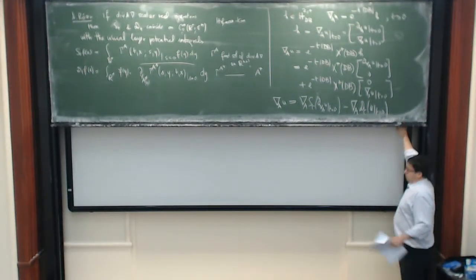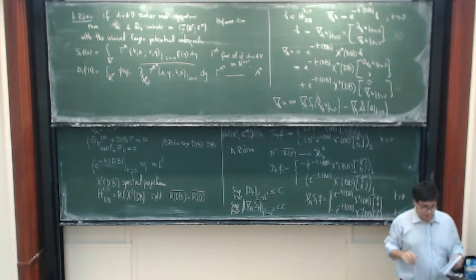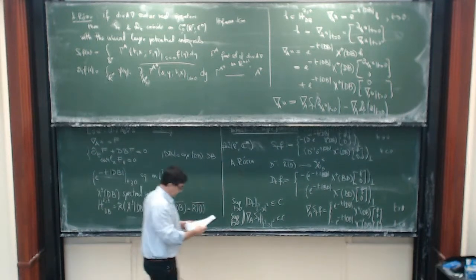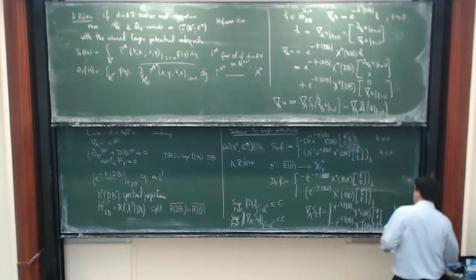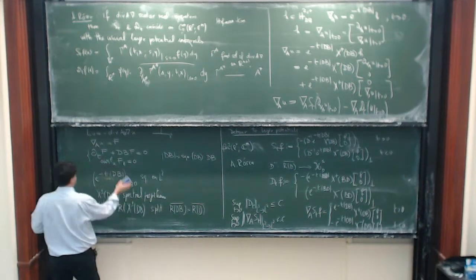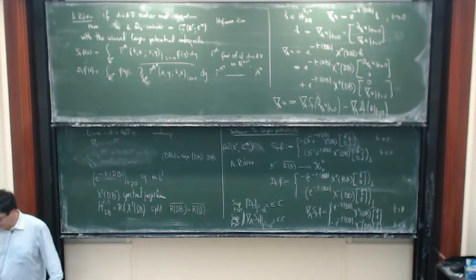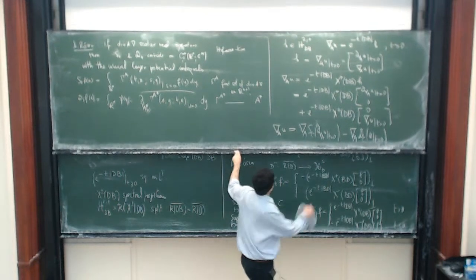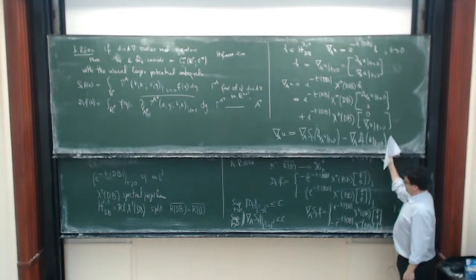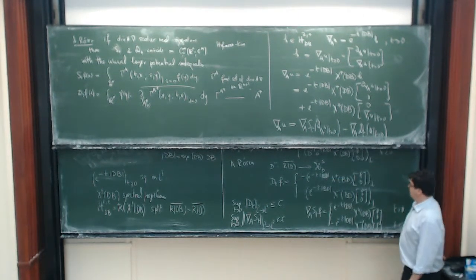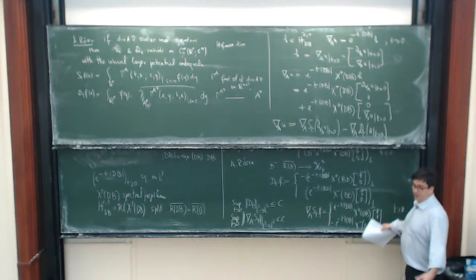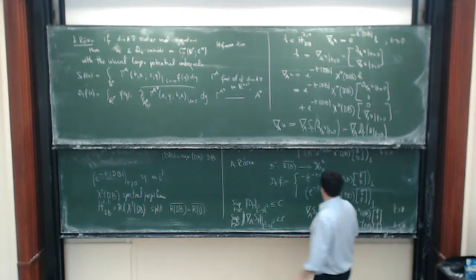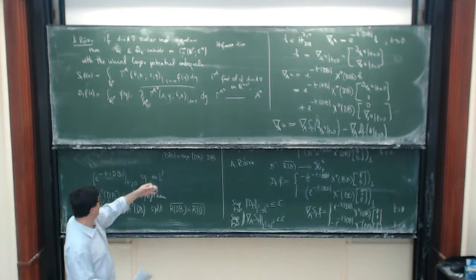It's especially interesting if you can work this method in different types of topology. For the single layer you use DB, and for the double layer you have to use BD. That's just how it comes from the functional calculus. It fits Green's formula — it's exactly Green's formula in the abstract setting here, except that I don't integrate by parts. I can't integrate by parts; I don't even know if I have integrals here. So it's just an operator thing.